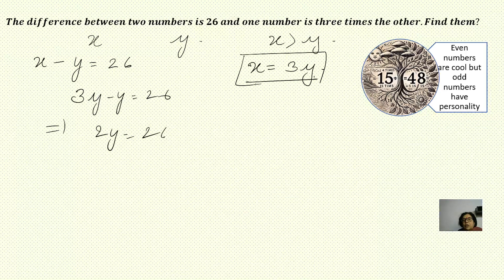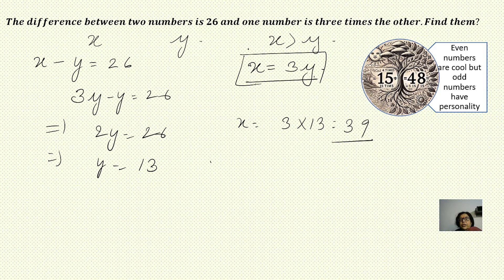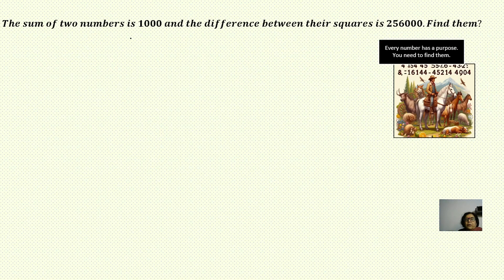We replace x with 3y, so we get 3y minus y equals 26, which implies 2y equals 26. So y equals 13. Therefore x becomes 3 into 13, which equals 39. So x is 39 and y is 13. You can check: the difference between them is 26.